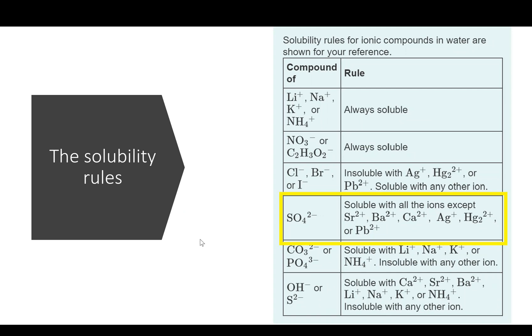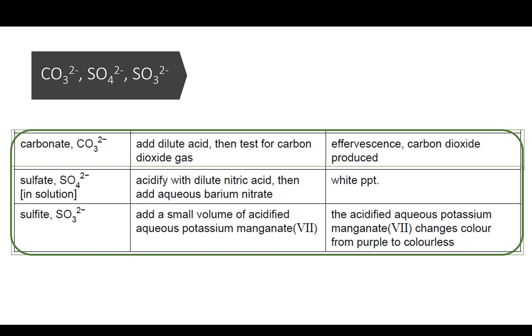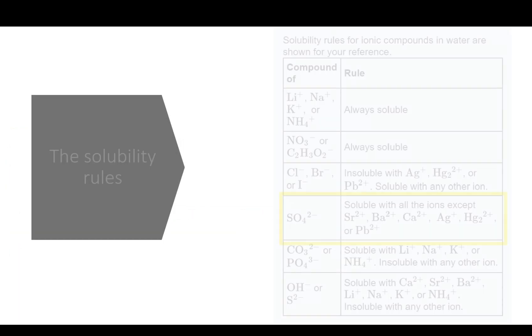Sulfates are mostly soluble except with a few ions, including barium. And that's why barium nitrate is used to test for the presence of sulfate. But before barium nitrate is added, nitric acid must be added first to get rid of any carbonate impurities because it will give the same result as the sulfate.